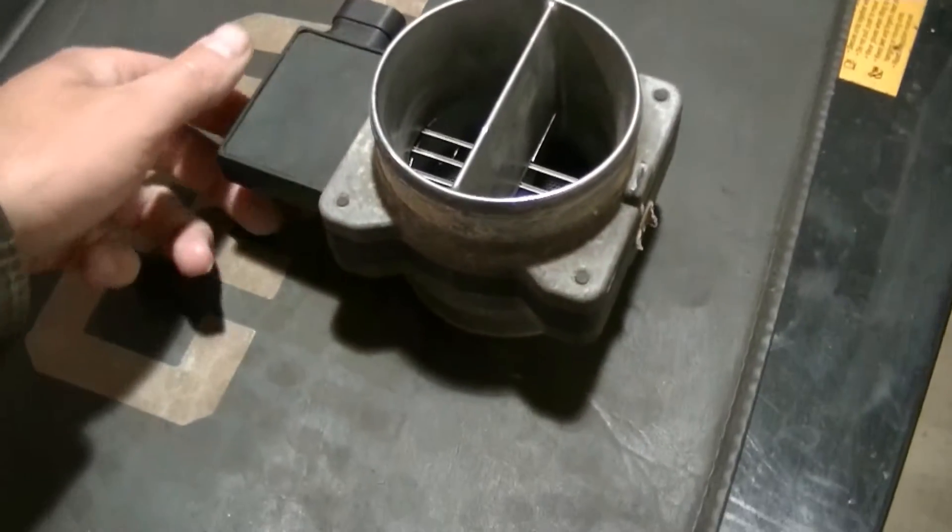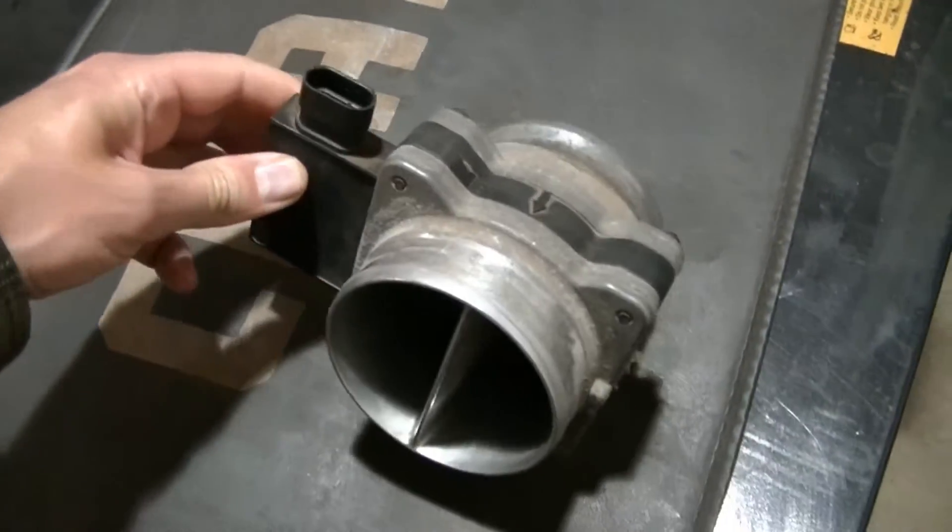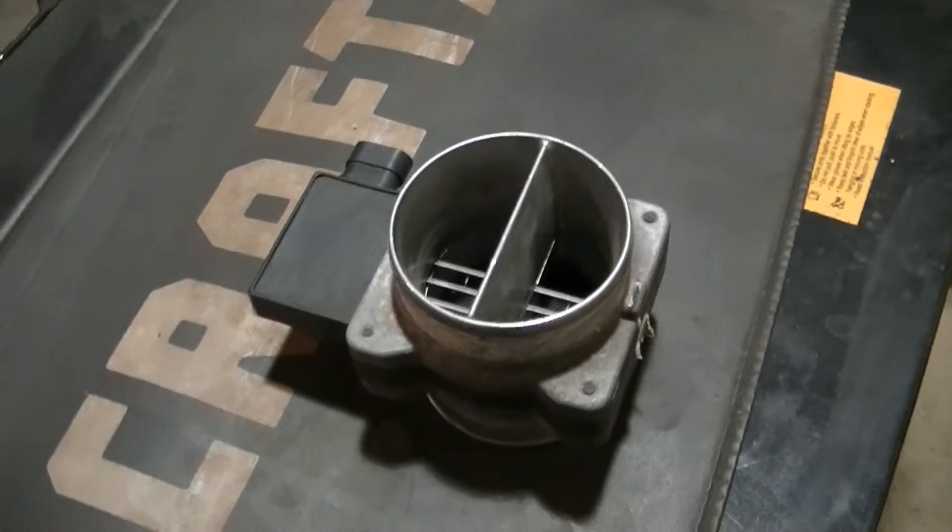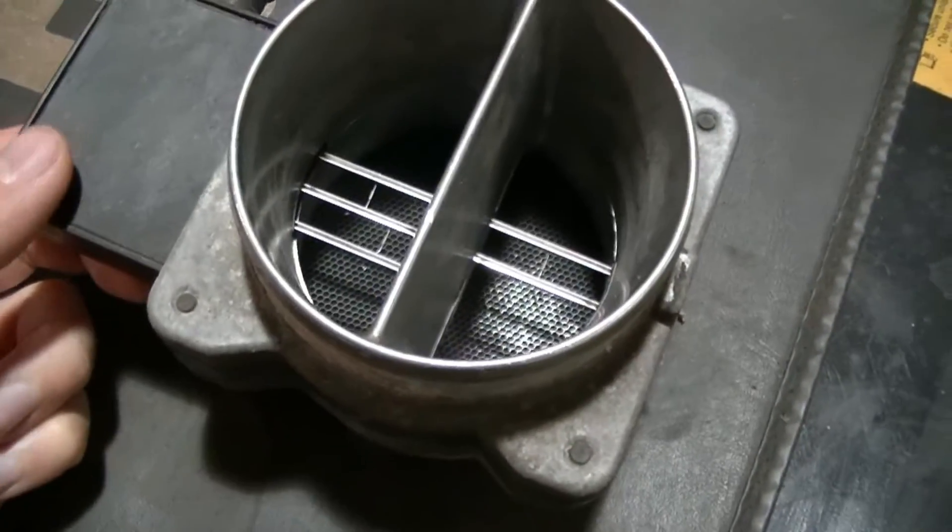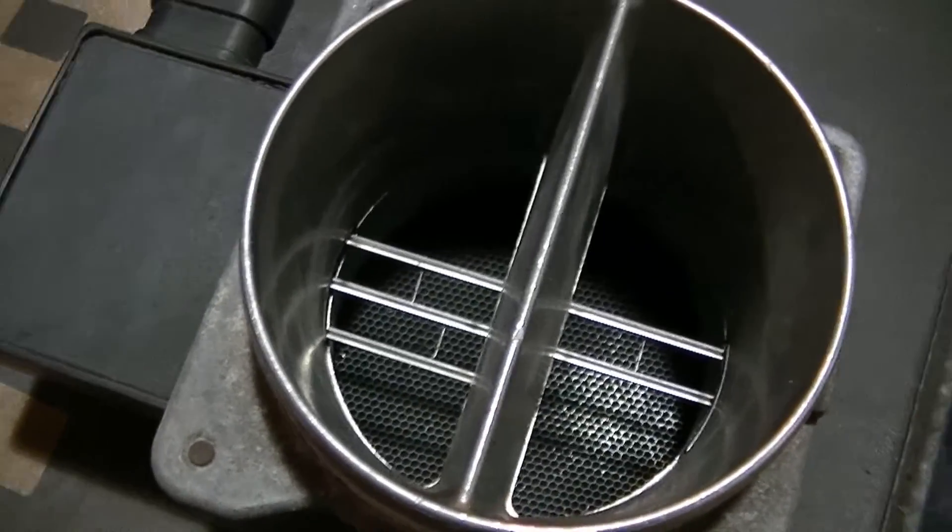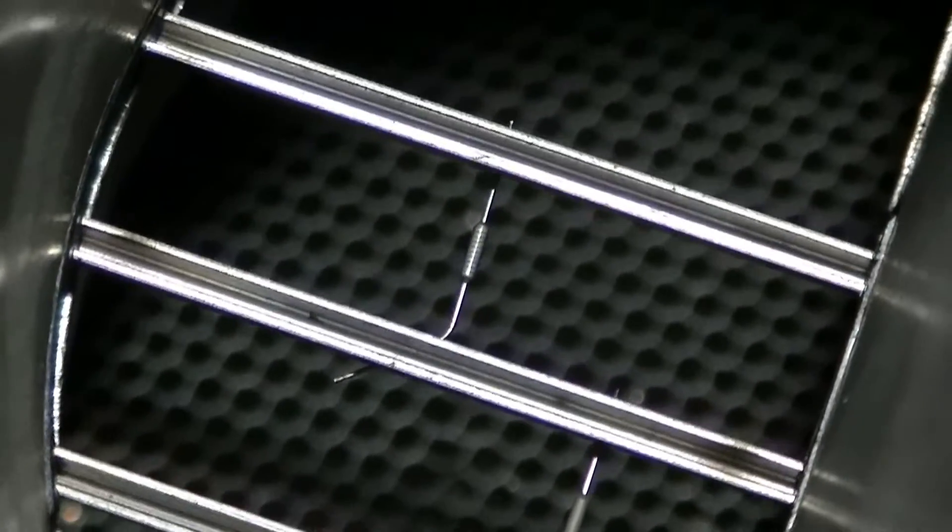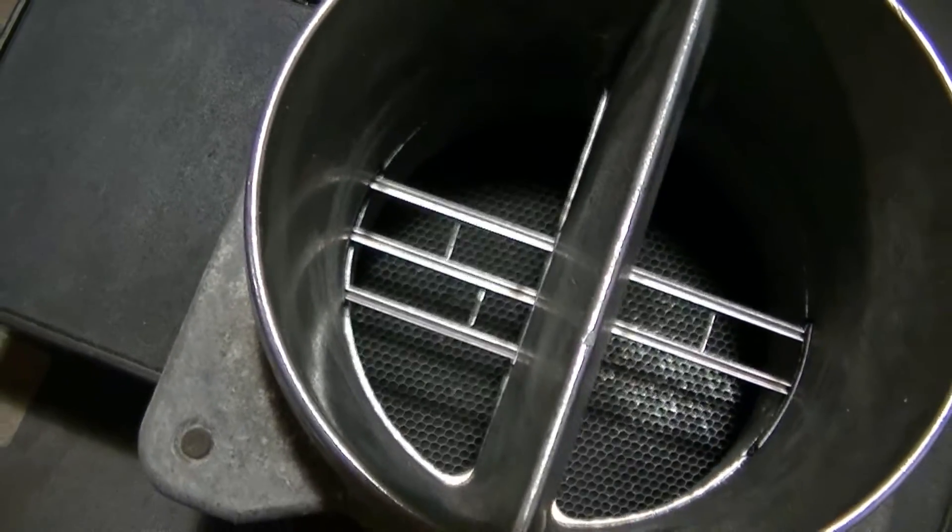I got my old MAF sensor here. Figured I would share some information that I learned about how these work while I was researching. I'll give you a very quick explanation on how this works. Basically, one of these wires is heated up to a certain temperature, and as air runs across that, it cools it down.